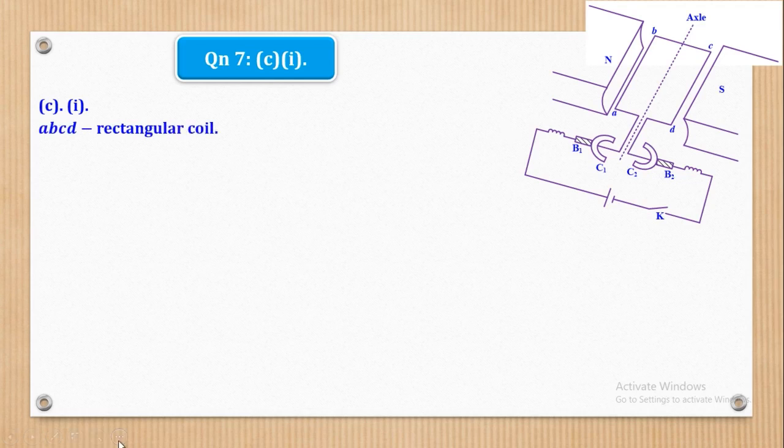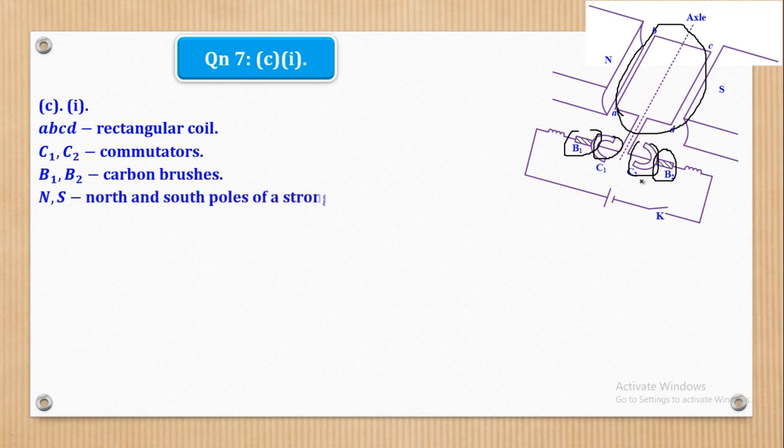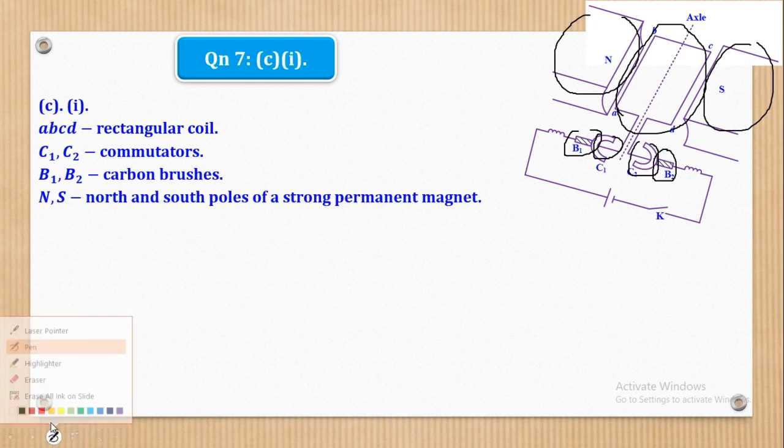So we shall come and say that A, B, C, D, which is this, the whole of this is a rectangular coil. Then C1, C2 are the commutators. So this one and this one are what we call the commutators. B1, B2 are the carbon brushes. So this one and this one are what we call the carbon brushes. And lastly, capital N and capital S denote the north and south poles of a strong permanent magnet. So this is the north pole of a strong permanent magnet and this one is the south pole of a strong permanent magnet. So basically, that's the labelling of a DC motor.